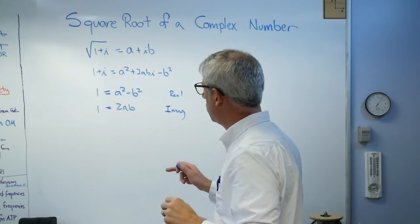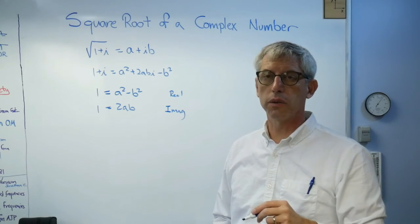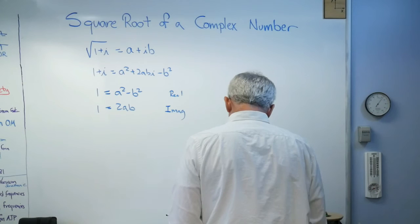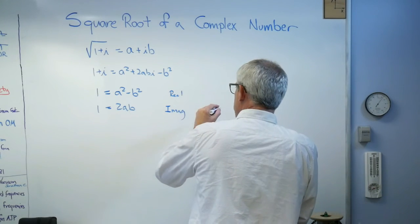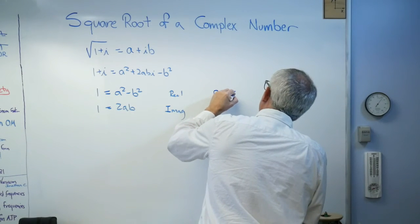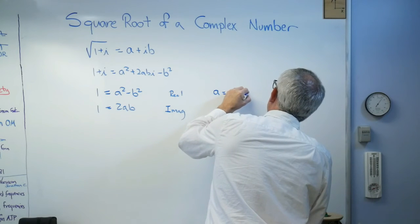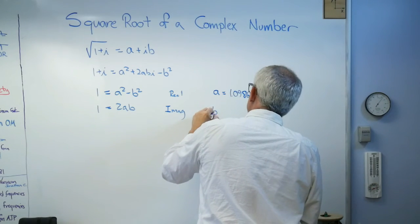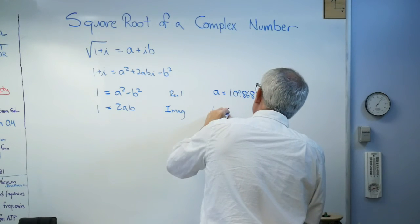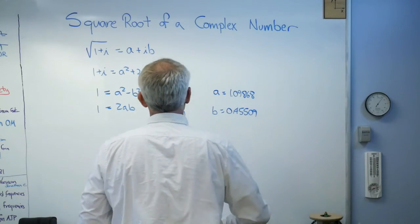And if you grind this out, you get a, have to find the root of, I think it's a fourth order polynomial. This is one that I have to just write down. This is not going to be one of these ones where it's nice and tidy to figure out. So a equals 1.09868. B equals 0.45509. So there you go.